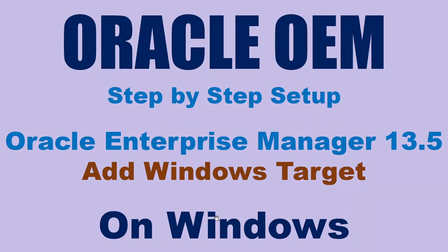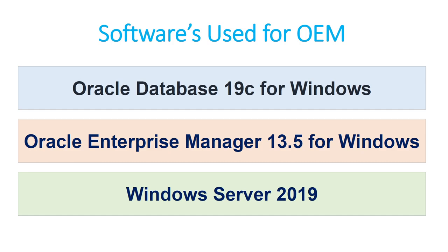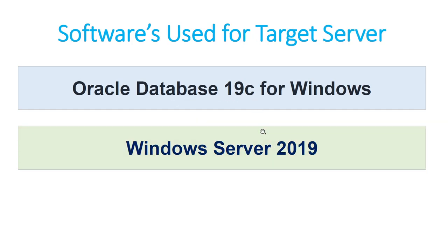Hello, in this tutorial we will learn how to add a Windows target in Oracle Enterprise Manager OEM 13.5, which is also installed on Windows. OEM is running on Windows Server 2019 with Oracle Database 19c as the OEM repository. The target server we are going to monitor is also hosted on Windows Server 2019 running Oracle Database 19c.